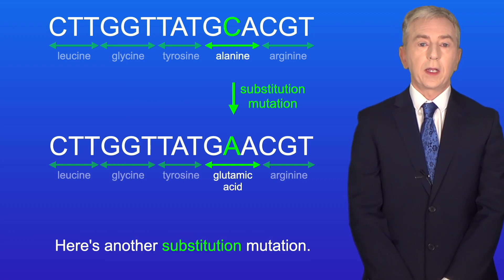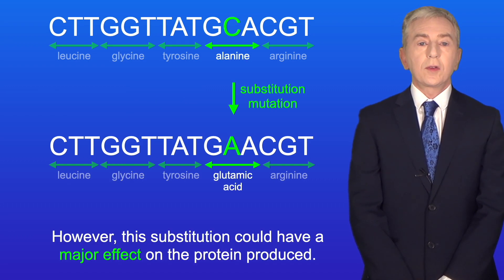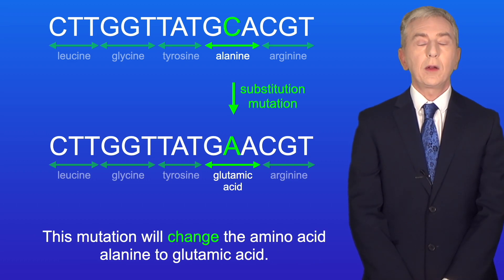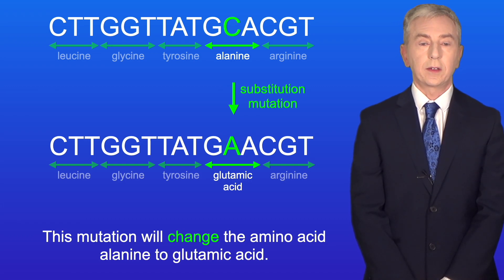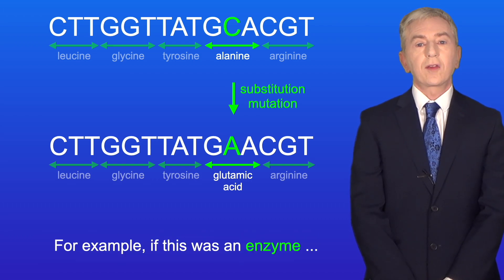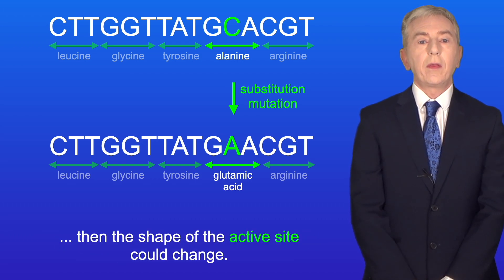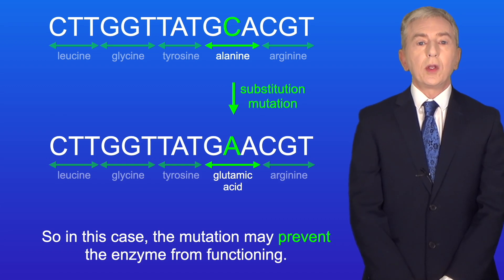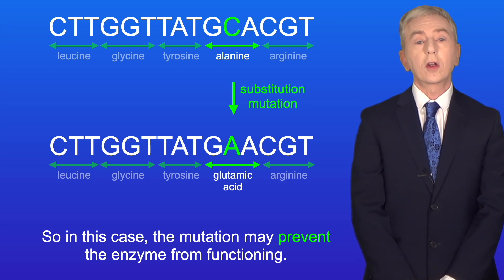Here's another substitution mutation. This substitution could have a major effect on the protein produced — this mutation will change the amino acid alanine to glutamic acid. Changing an amino acid could affect the tertiary structure of the protein. For example, if this was an enzyme, then the shape of the active site could change, and this might prevent the substrate from binding to the active site. So in this case, the mutation may prevent the enzyme from functioning.